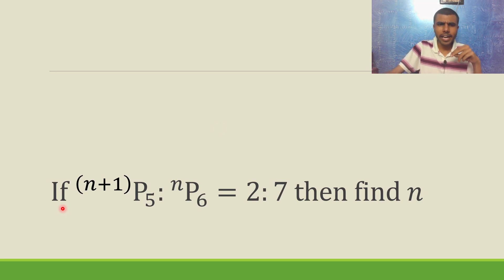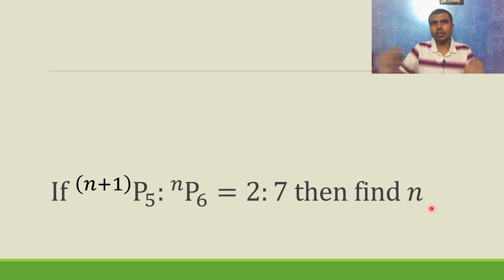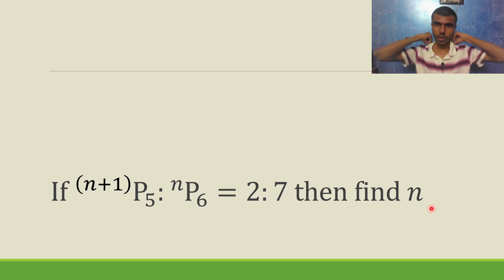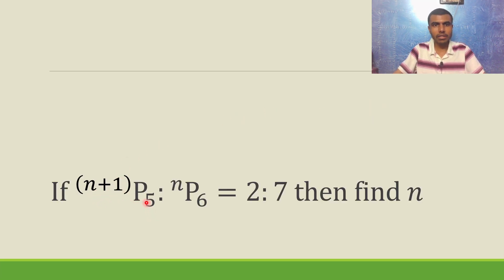Hello learners. Here (n+1)P5 is to nP6 is 2 is to 7. We have to find n. Now see carefully how we are going to do this. What is nPr? nPr is nothing but n factorial by n minus r factorial.